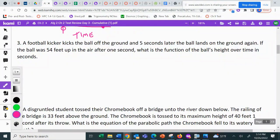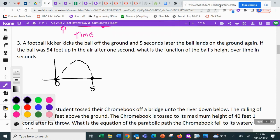Number three, a football kicker kicks the ball off the ground and five seconds later, the ball lands on the ground again. Okay. We've got another one that's starting on the ground, kicks off the ground, lands on the ground again. This says five seconds later. So that's got to be five. I'm going to make this time zero. If the ball was 54 feet up in the air after one second, what is the function of the ball's height over time in seconds?